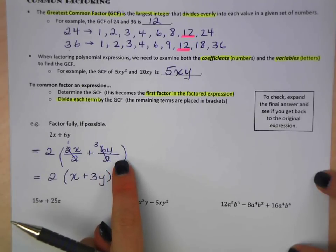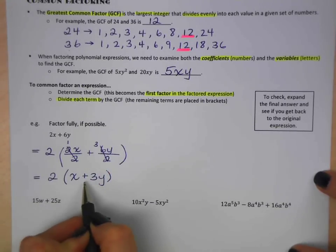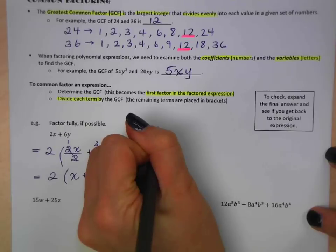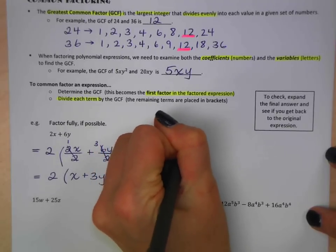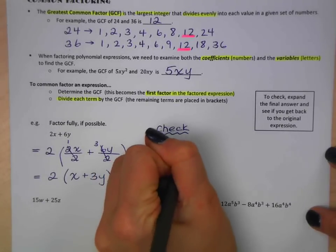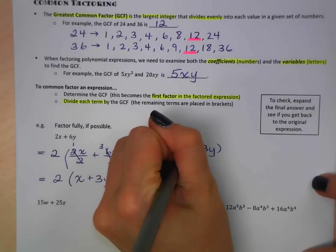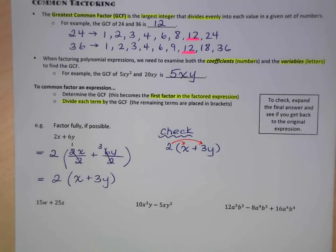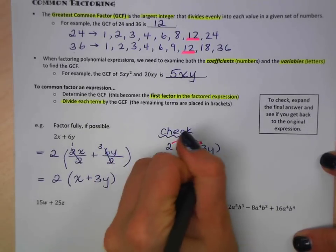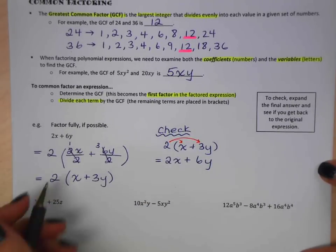Now again, this step is what's happening in your head, but you're not going to write it out. If you're not sure that you did it correctly, you can always check. And to check, we're going to expand to see if we get back to this expression. Let's just see what this looks like. So I'm going to start with my answer. 2x plus 3y. And again, I need to distribute. I'm going to expand. 2x plus 2 times 3y, 6y. And yes, I did get back to my first question, so I know that this answer is correct.